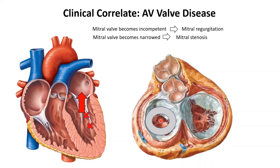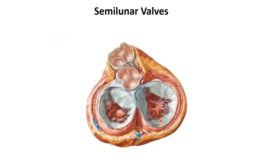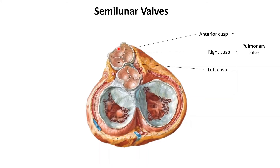Let's have a closer look at the semilunar valves, beginning with the pulmonary valve. The pulmonary valve has three parts: the anterior cusp, the right cusp, and the left cusp. They've been named according to their position — this is on the right side so it's the right cusp, this is on the left side so it's the left cusp, and this is the anterior one so it's called the anterior cusp.